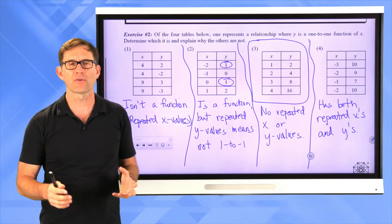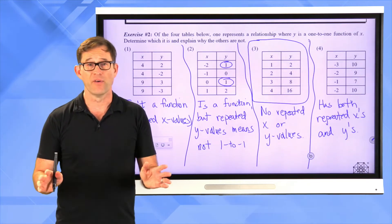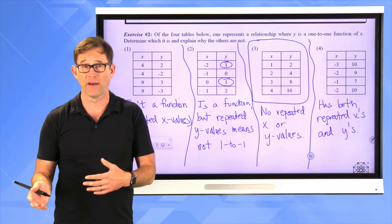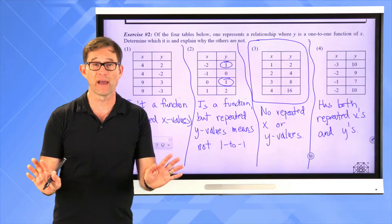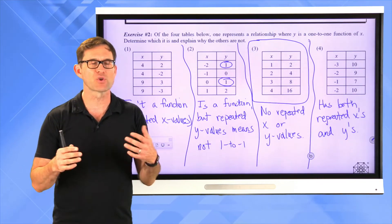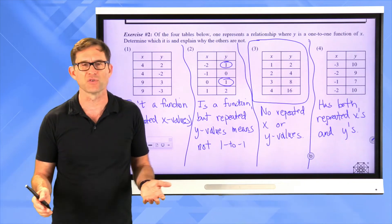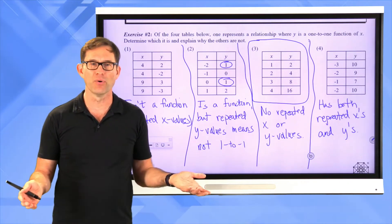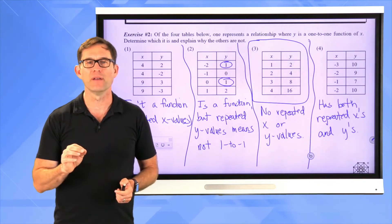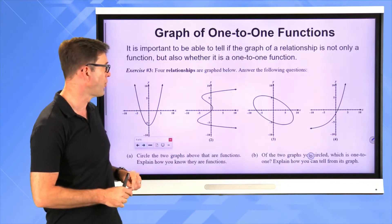No repeated x or y values — that's an interesting categorization. Most functions have repeated y values; no function has a repeated x value. But many functions — squaring functions, absolute value functions — have repeated outputs. In a one-to-one function, every input gets a unique output that hasn't occurred before.